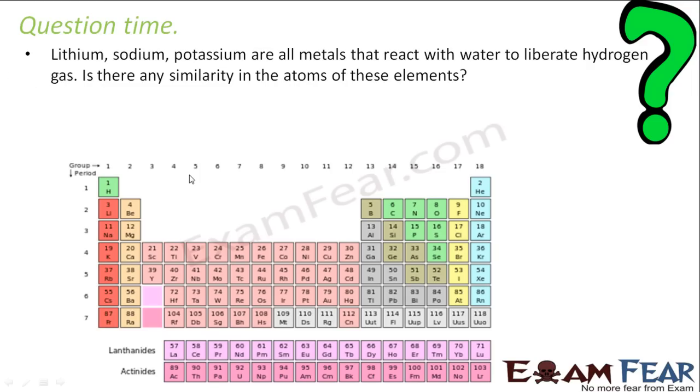Lithium, sodium, potassium are all metals that react to liberate hydrogen. Is there any similarity in these elements? Let's see. Lithium, sodium, potassium. Yes, they have a similarity. They are all group of elements and they have a valence electron of one. They have one valence electron. So that is the similarity.